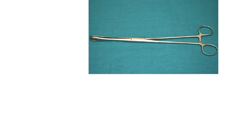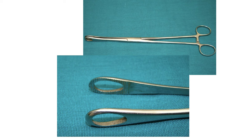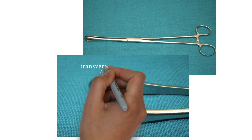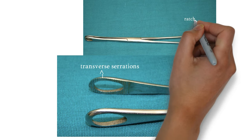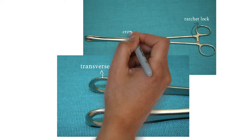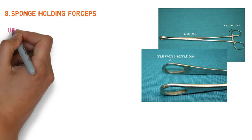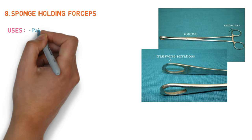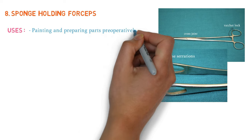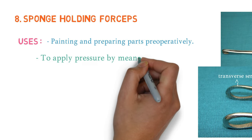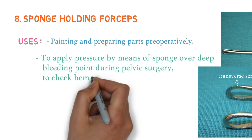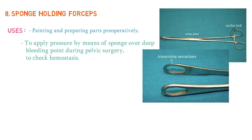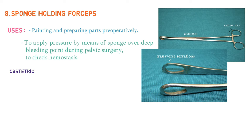Our next instrument is sponge holding forceps. It has round fenestrated ends with transverse serrations. The proximal end has finger rings with ratchet lock and a cross joint. The uses are: painting and preparing parts pre-operatively, to apply pressure by means of sponge over deep bleeding points during pelvic surgery, and to check hemostasis.